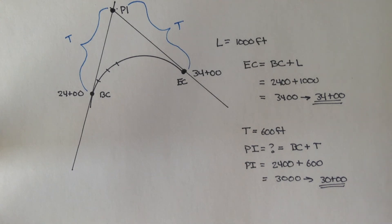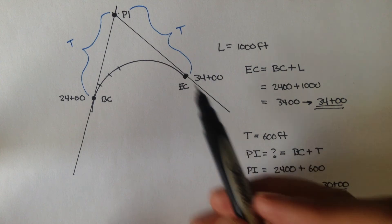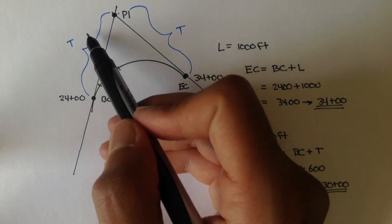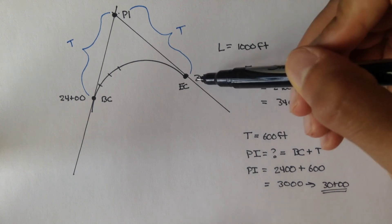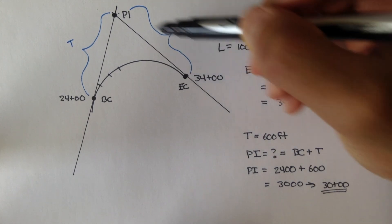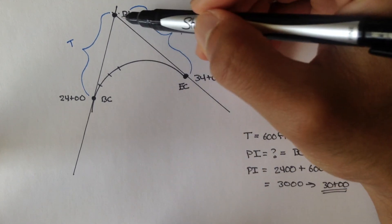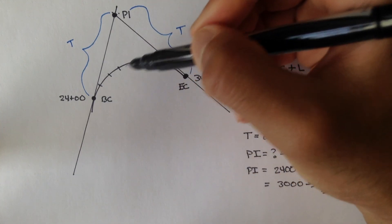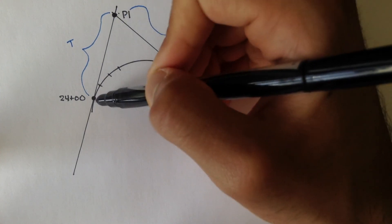Now, there's one more thing. You may have asked, why can't we take, or can we take the EC and subtract T to get PI just as we did BC, we added T to get PI. Even though they're the same distance, you actually can't do that. You can't take the end of curve, subtract T, and call that your PI. It won't work. Even though these T's are the same, the only way you can figure out what PI is adding T to BC.